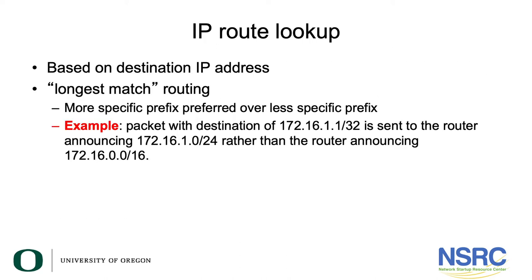What is an IP route lookup? IP route lookups are based on destination IP addresses. Longest match routing is typically used — this means that the more specific prefix is preferred over the less specific prefix. For example, a packet with destination IP address of 172.16.1.1/32 is sent to the router announcing 172.16.1.0/24 rather than the router announcing 172.16.0.0/16. Remember, the most specific prefix is preferred over the less specific one.